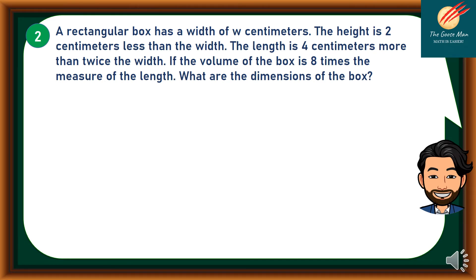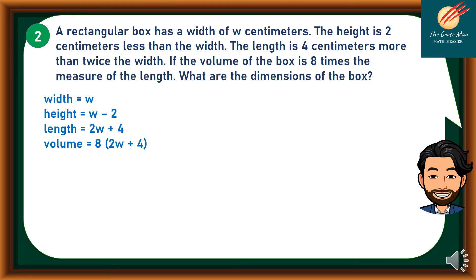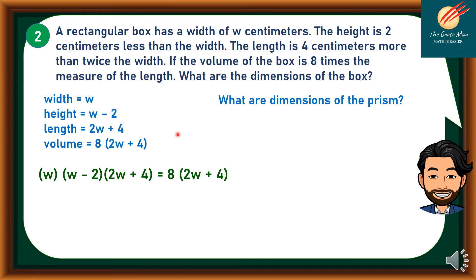Let's consider problem number 2. A rectangular box has a width of w centimeters. The height is 2 centimeters less than the width. The length is 4 centimeters more than twice the width. If the volume of the box is 8 times the measure of the length, what are the dimensions of the box? From the given: width equals w, height equals w minus 2, length equals 2w plus 4. The volume equals 8 times (2w plus 4), since this is 8 times the length. We want to find the dimensions of the box.